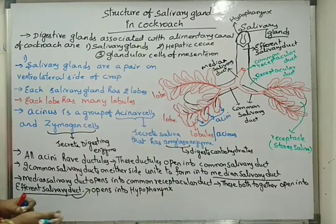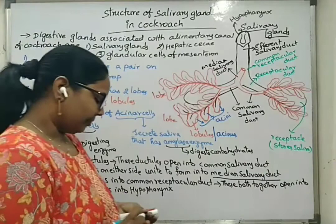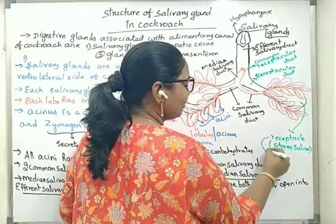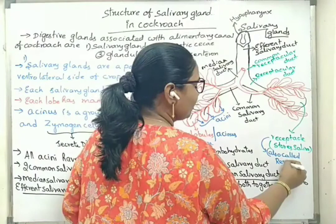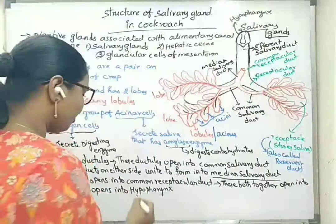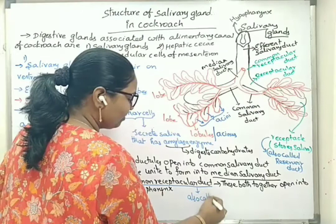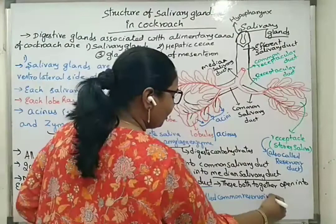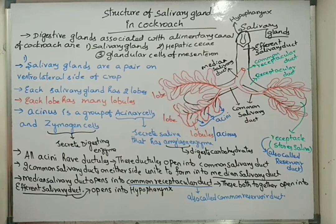The hypopharynx is also called the tongue. The receptacle is also called the reservoir duct, and the common receptacular duct is also called the common reservoir duct. These are the key points related to the structure of salivary glands of cockroach.